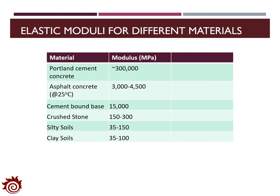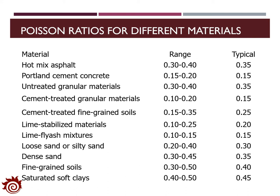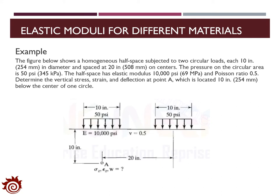In the multi-layer elasticity theory, the modulus of elasticity is assumed constant for each layer. A table summarizes typical elastic moduli for different materials: PCC has the highest modulus at around 300,000 MPa, while silt and clay soils have the lowest. A separate table shows typical Poisson's ratio values and their ranges for different pavement materials, which are needed for the stress and strain analysis.